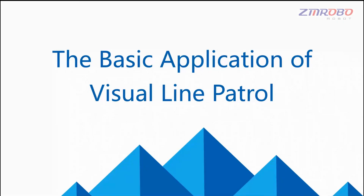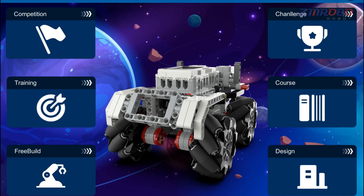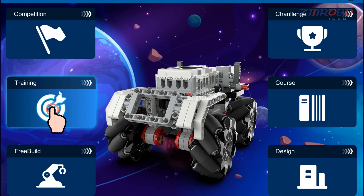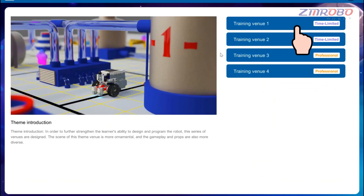Hello everyone, welcome to the RoboSim virtual robotics class. In this lesson we will learn the basic content of the visual line patrol application. First, let's understand in what scenarios the robot will use visual line patrol. We can open the RoboSim software, click on Training in the home page, then click on Outward Bound and choose Training Venue One.